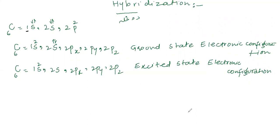The theory or the process of hybridization — basically, the characteristics of carbon, or the compounds of carbon, they have to experience this theory, this process, or this concept.